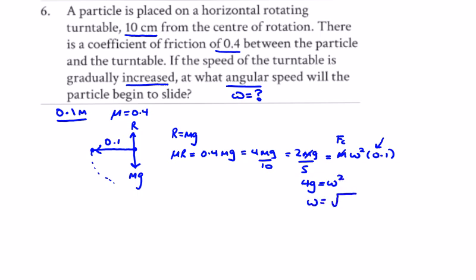is equal to the square root of 4g, which you can write in whatever form you want. I think it works out to be about 6.2-something, 6.26 or 7, in radians per second.